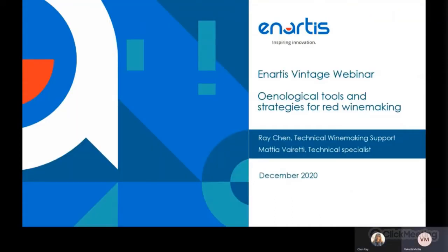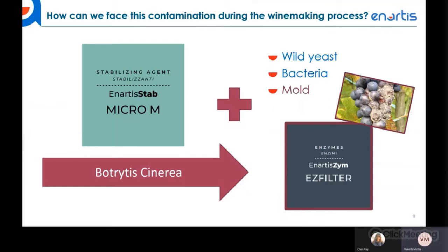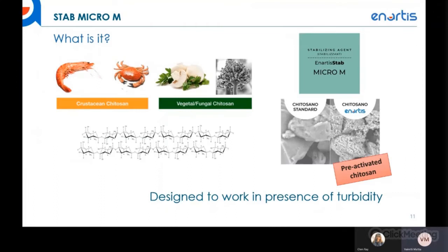Thank you, Rei, for this introduction on microbial control. My name is Mattia Vaieretti, An Artis Technical Support. Today I'll talk about how to manage microbial contamination in wine and in juice — specifically chitosan, and An Artis' tool containing chitosan: An Artis Stam Microem. I'll also talk about a specific enzyme called An Artis Ezyme EzFilter that can manage the effects of Botrytis contamination. Stam Microem is a product made of preactivated chitosan combined with it-starts beta-1,3-glucan.